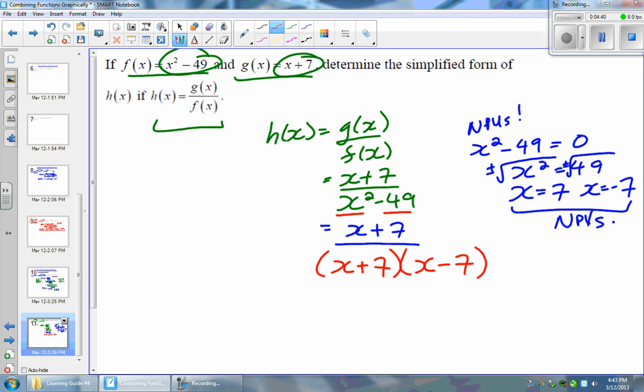So you check. Can we simplify? Are there any common factors on the top and on the bottom? Well, yes, we do. We have a common factor, and that is x plus 7. So if I cancel those out...